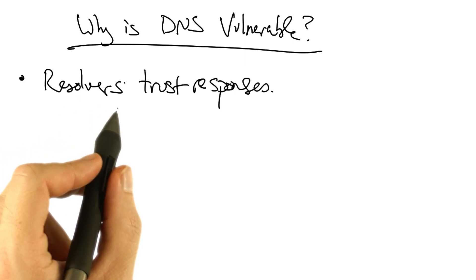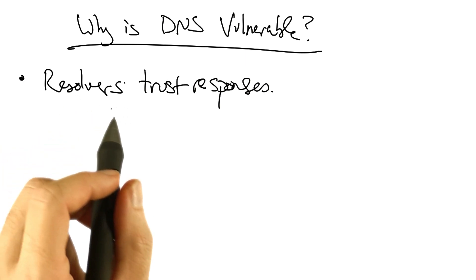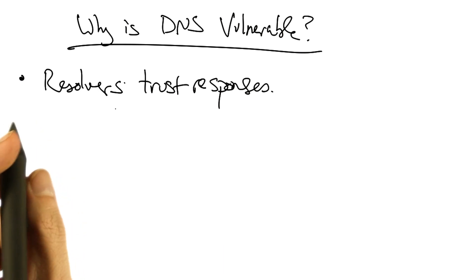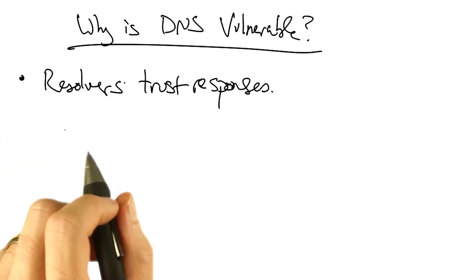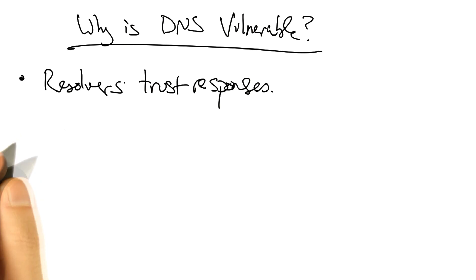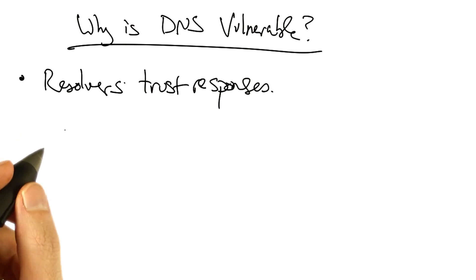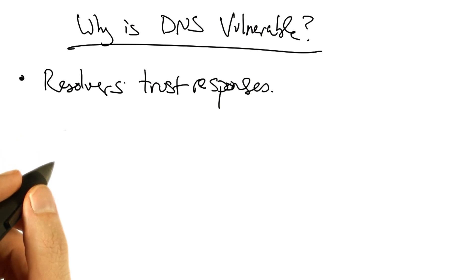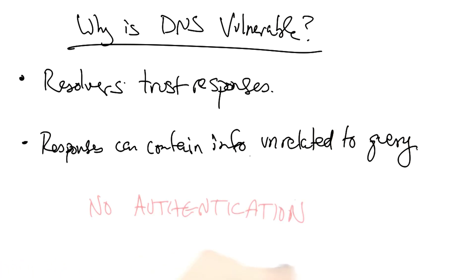When a resolver sends a query, it typically generates what's called a race condition. And if the attacker replies before the legitimate responder, then the resolver is likely to believe the attacker. DNS responses can also contain additional DNS information that's unrelated to the query.